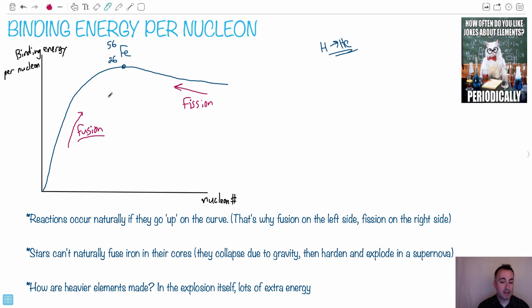So that's why fusion is on the left side, fission is on the right. So to go naturally occurring, you've got to go up on this curve.